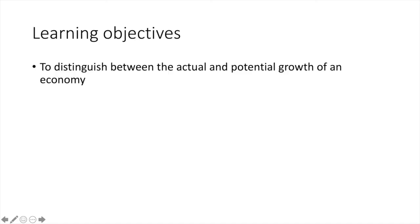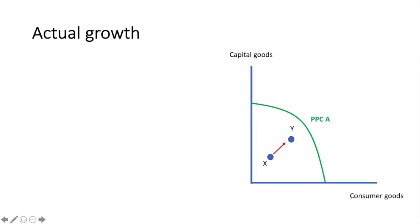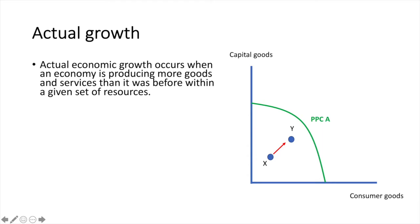In this video we'll distinguish between the actual and potential growth of an economy. Actual economic growth occurs when an economy is producing more goods and services than it was before within a given set of resources.